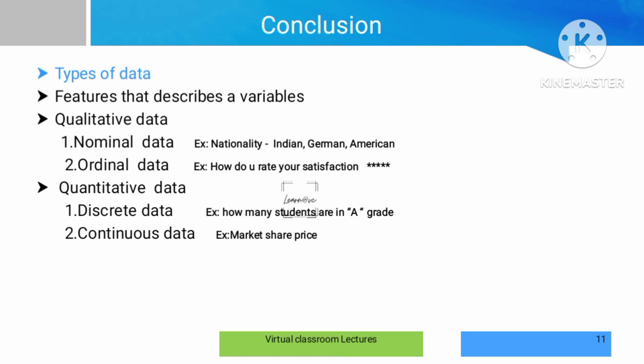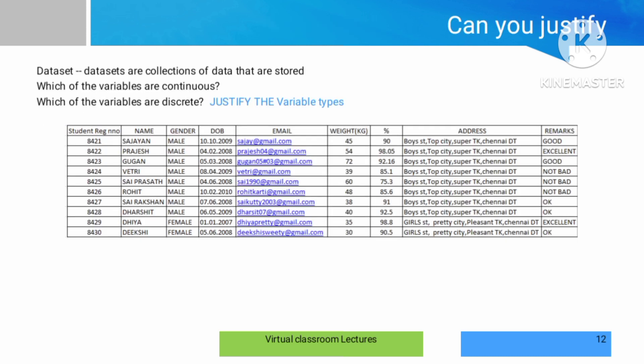In conclusion, this video covered the types of data. Qualitative data has two types: nominal, which is categorized with no order, and ordinal, which is categorized with an order. Quantitative data also has two types: discrete data, which consists of countable whole numbers such as the number of students with an A grade, and continuous data, where values vary continuously. If you want to observe a dataset, you can identify what type of variable each column is — for example, whether a student register number is discrete, continuous, nominal, or ordinal.